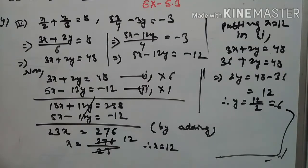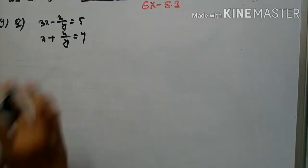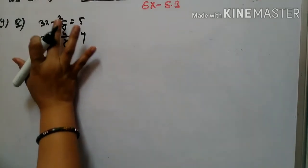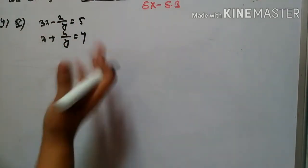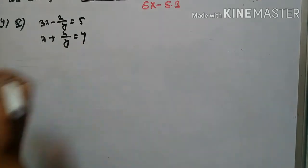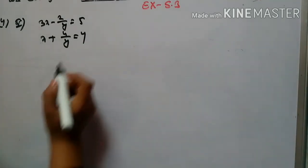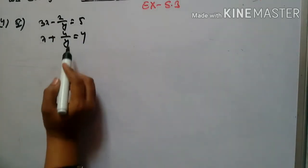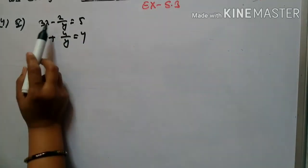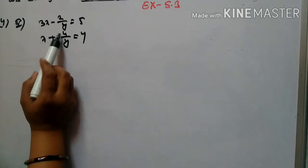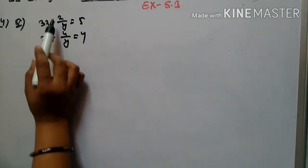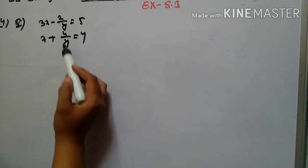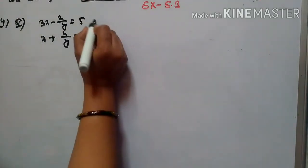So x = 12 and y = 6 is the required solution for question number 4. Now we move to question number 5: 3x - 2/y = 5 and x + 4/y = 4. This looks like the terms can be matched — since one has 2/y and the other 4/y, multiplying equation 1 by 2 will make them equal.